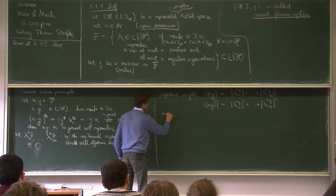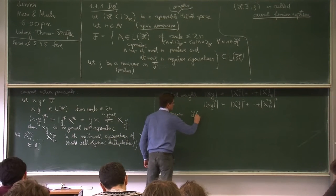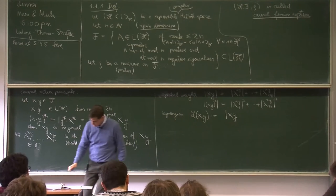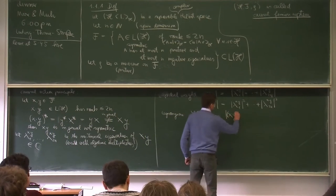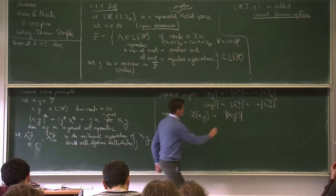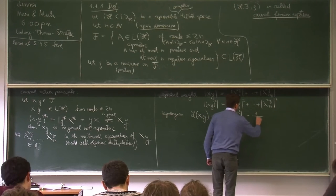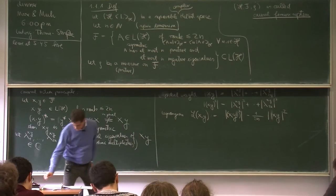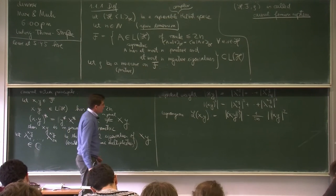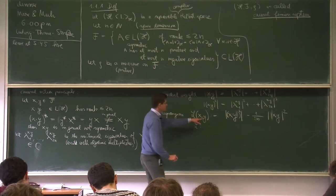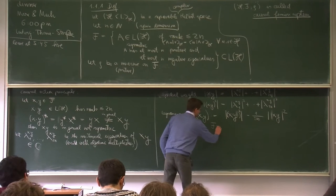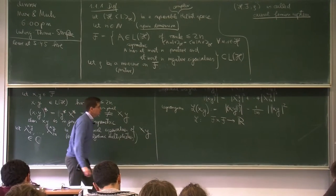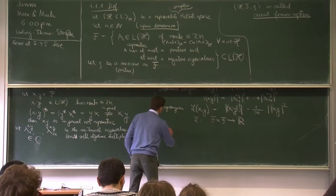Now we can write down the Lagrangian. We introduce L(x,y) defined as the spectral weight of (x times y)^2 minus 1/(2n) times the spectral weight of x times y, all squared. This is a mapping from F × F to the real numbers. The Causal Action is then the integral over F × F of L(x, y) with respect to the measure rho — the universal measure — integrated twice, d rho(x) d rho(y).